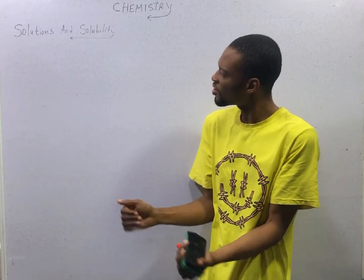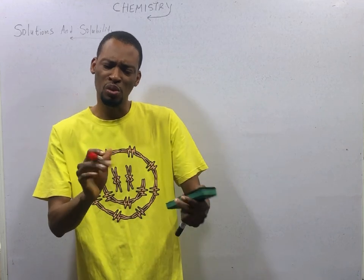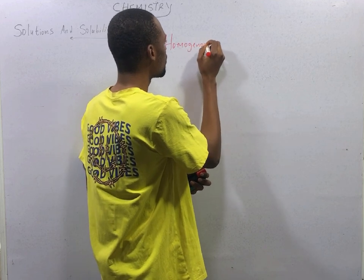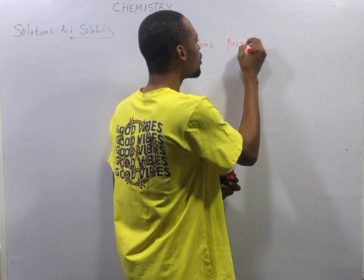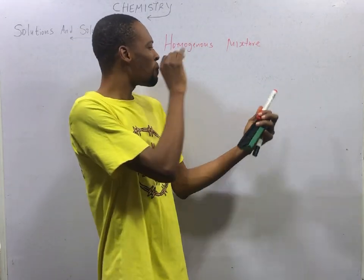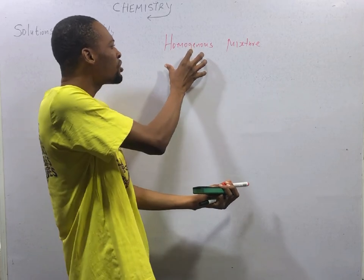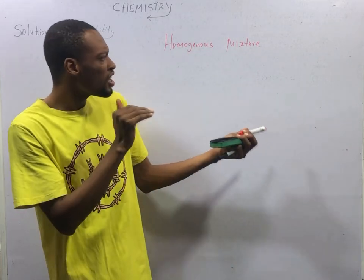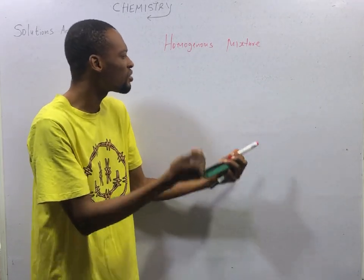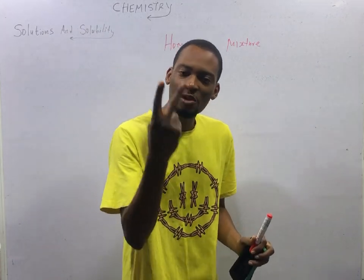A solution is a homogeneous mixture of two or more substances. We agree that a mixture is two or more substances physically combined, and homogeneous refers to uniform. So if we have two or more substances physically combined and this combination is uniform, a solution has been formed. We have two types of solution.